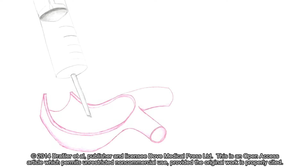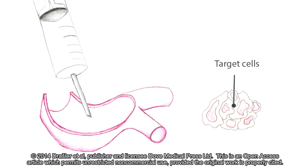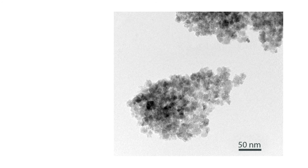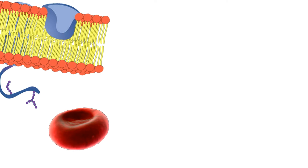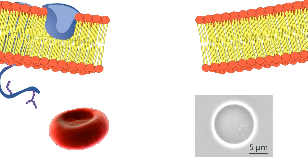When nanoparticles are administered intravenously, they interact with both target and non-target cells, especially with red blood cells. Among the most interesting nanoparticles, as potential diagnostic and therapeutic agents, are cobalt ferrite magnetic nanoparticles. To test their hazardous potential, we conduct experiments on biological membranes of red blood cells and on artificial lipid membranes.